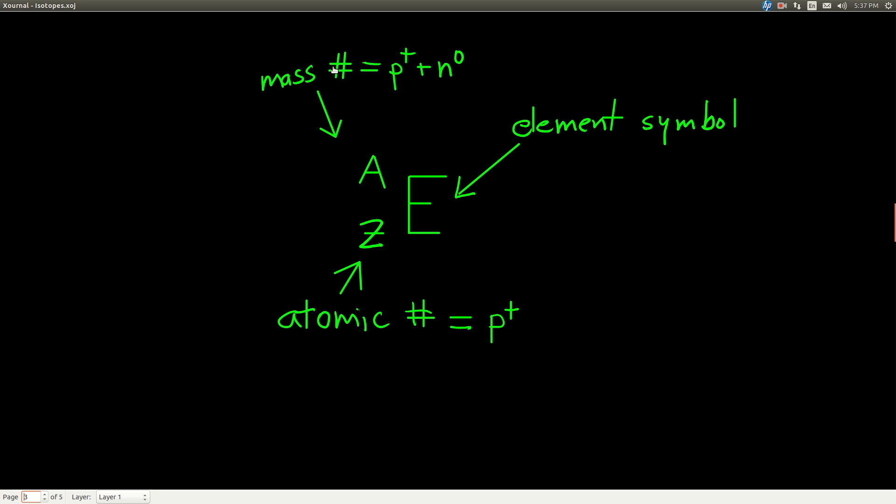A is what we call the mass number, and it's an integer representing how many protons there are plus how many neutrons. The atomic number, Z, is just how many protons there are. Now, if we know the mass number and the atomic number, if we subtract the two, A minus Z, that'll tell us how many neutrons there are, because protons plus neutrons minus protons equals neutrons.